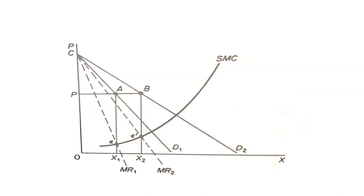The monopolist takes into consideration the elasticity of demand while deciding the price of the market. The upward shift of the market demand — provided that the new demand curve does not intersect the initial one — will result in a new market equilibrium in which the quantity produced will be larger. In the new equilibrium, the price may remain constant while the quantity supplied increases. Assume that the new demand curve is D2 and to the right of D1. The shift in demand curve will lead to a shift in marginal revenue curve from R1 to R2. Given the marginal cost curve of the monopolist, the new equilibrium position will be E'.